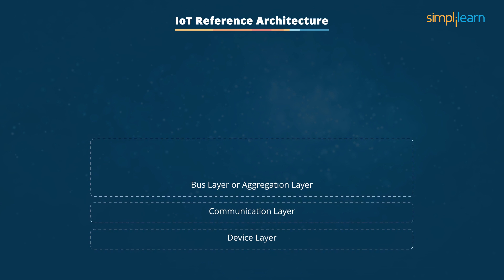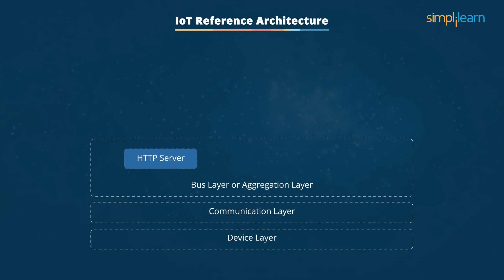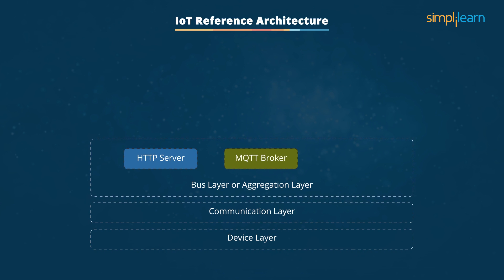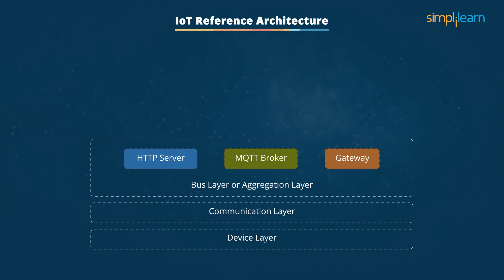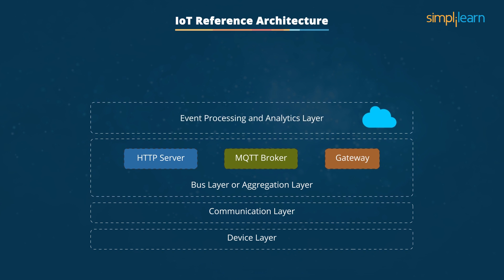The bus layer is important for three reasons: it supports an HTTP server and/or a MQTT broker, it aggregates and combines communications via gateway, and it bridges and transforms data between different protocols.